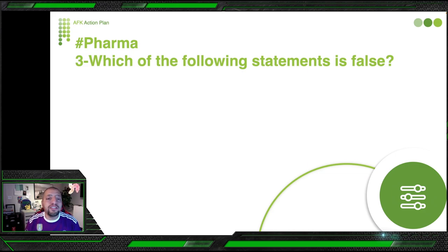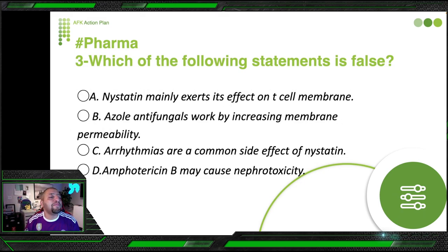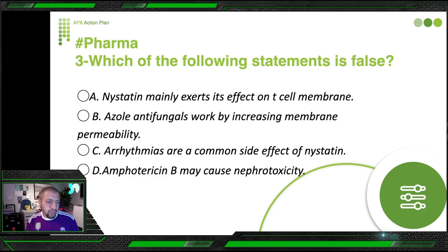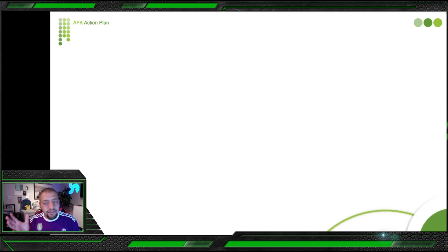Next question from pharmacology. Which of the following statement is false? The options are: nystatin mainly exerts its effect on the cell membrane; azole antifungals work by increasing membrane permeability; arrhythmia is a common side effect of nystatin; amphotericin B may cause nephrotoxicity. Antifungal drugs have a lot of severe and hard side effects, which is why most commonly we give antifungals topically. Let's go through some side effects of the famous drugs.